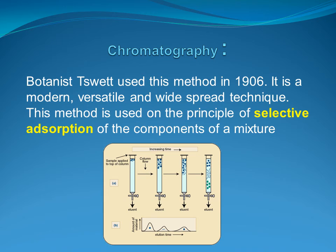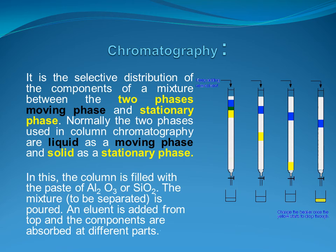The last method of refining is chromatography. It is a modern, versatile, and widespread technique based on the principle of selective adsorption of the components of a mixture. It involves the selective distribution of components between two phases: the moving phase and the stationary phase. In column chromatography, the column is filled with a paste of a solid stationary phase like aluminum oxide or silica, and the mixture to be separated is poured from the top.